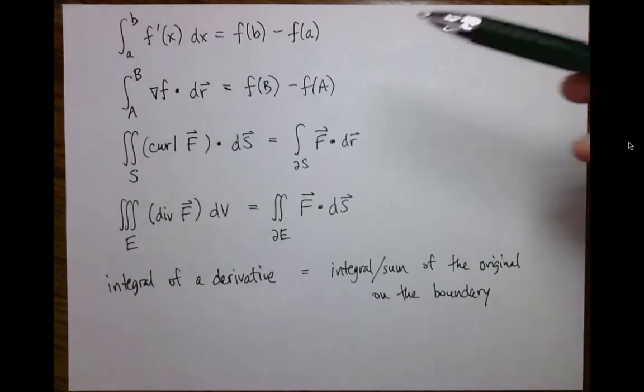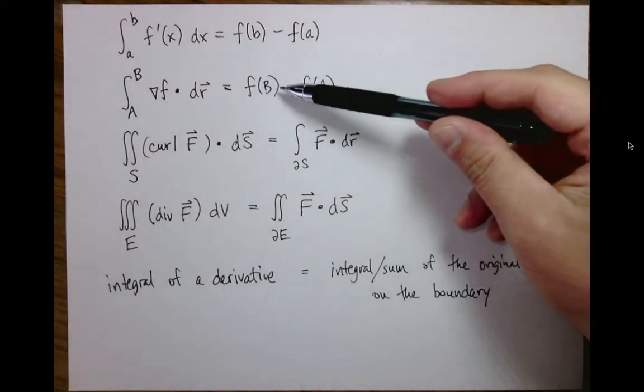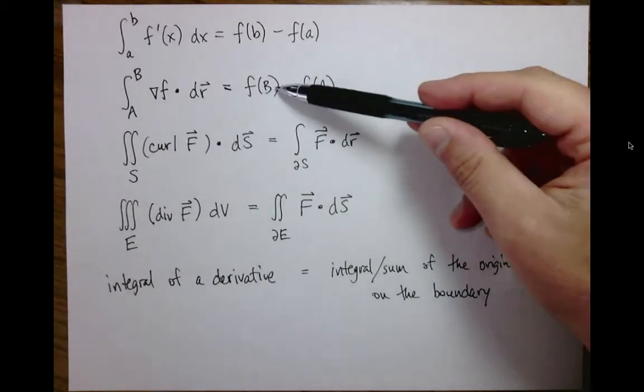So for a line integral, the boundary is the endpoints. And if you think about it, if you're pointing outwards, then f of a has to be the negative of this one.